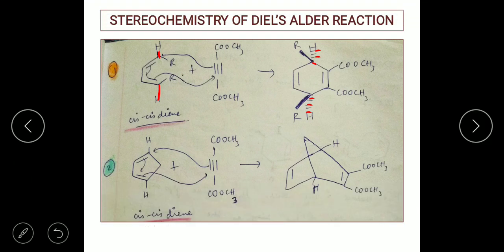Talking about the R groups, they are inside groups of the diene, and inside groups are always above the plane. That is why we represent them with dashed lines meaning above the plane. This is a key stereochemistry rule to remember whenever you are asked to write the product including stereochemistry: outside groups are always below the plane and inside groups are always above the plane.